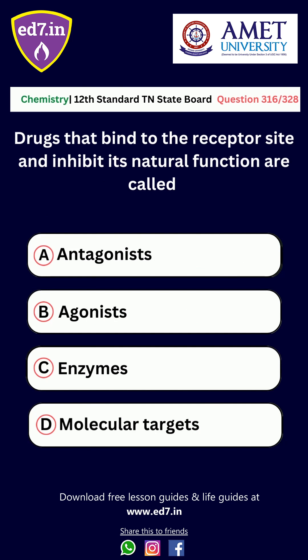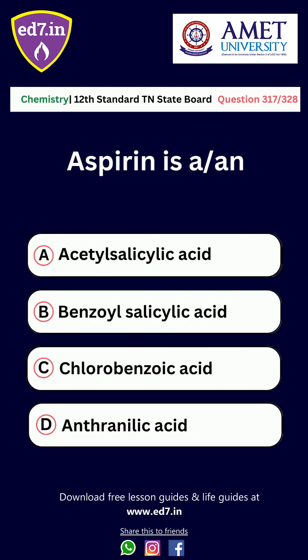Question number 315: Drugs that bind to the receptor site and inhibit its natural functions are called — Option A: Antagonist, Option B: Agonist, Option C: Enzymes, Option D: Molecular targets. The correct option is Option A, Antagonist.